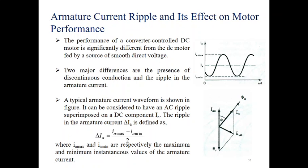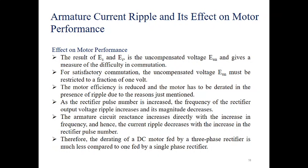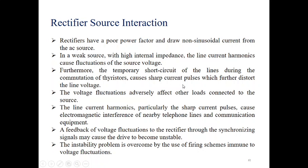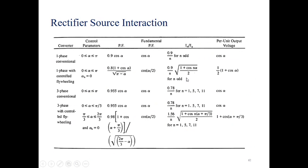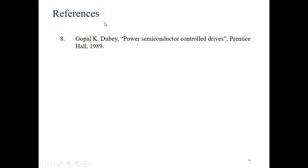Different current waveforms and the effect on motor performance are shown here. Examples related to different voltages and different firing angles alpha are presented. If the source is inductive, the effect of source inductance is shown — the table summarizes those effects. These are the references for further reading. Thank you.